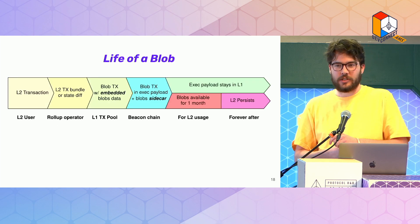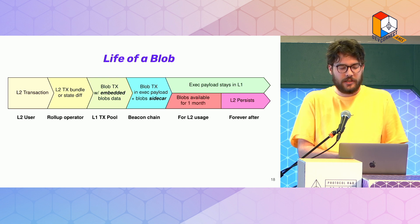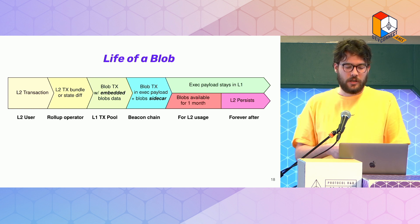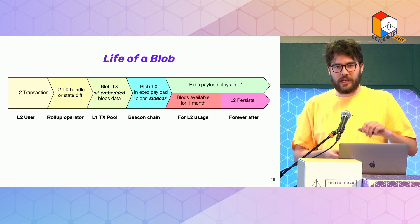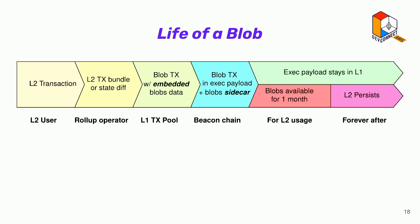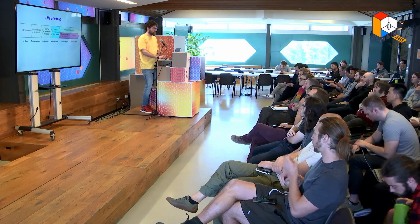So, the life of a blob: we have some layer 2 user creating a transaction, a rollup operator including the transaction, then we push this layer 2 data onto layer 1. We have a transaction pool where we're taking these blobs and publishing them. Then the beacon chain embeds these execution payloads, but the blobs are not embedded forever — they live as a separate sidecar. Now we can split the lifetime: continue processing layer 1 while blobs provide higher data throughput for layer 2.